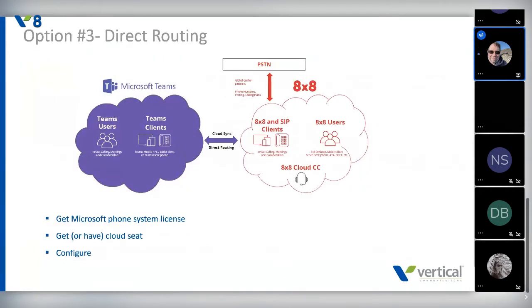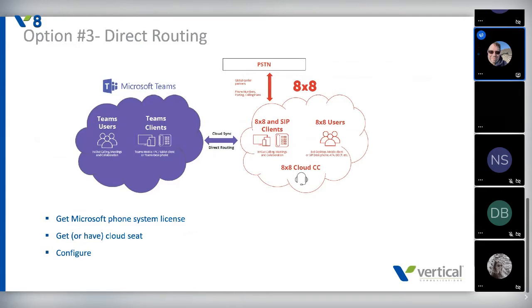The next option is called Direct Routing. If you haven't gotten an email about Microsoft Teams Direct Routing in the last two months, your email is down — everyone is sending out webinar emails about this. Direct Routing is very much like option one, except in this case the SBC is managed by somebody else. Here's an example with 8x8; Mitel works the same way, as does RingCentral and many others. You get the Microsoft Phone System license, you have your seat on your cloud PBX, and you set up the configuration one time.